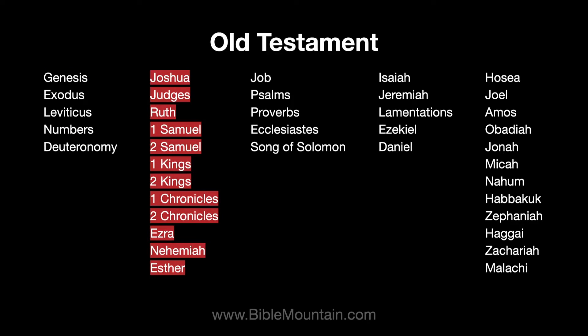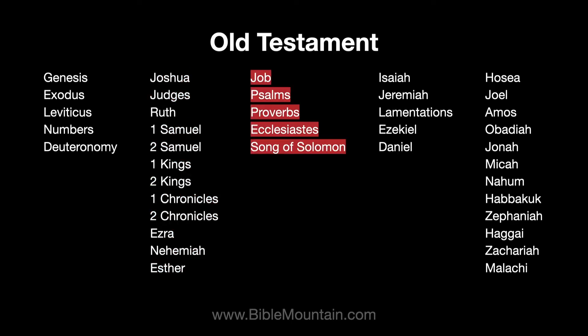The next 12 books are what we call the Books of History: Joshua, Judges, Ruth, 1 and 2 Samuel, 1 and 2 Kings, 1 and 2 Chronicles, Ezra, Nehemiah, and Esther. The next five books are called the Books of Poetry: Job, Psalms, Proverbs, Ecclesiastes, and Song of Solomon. Those books contain poems that were written during the events recorded in the first 17 books of the Old Testament.